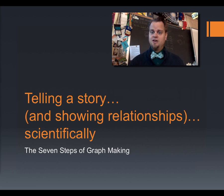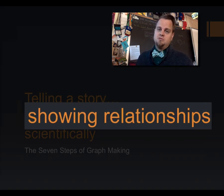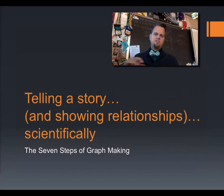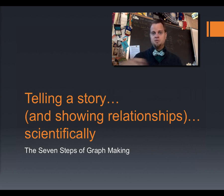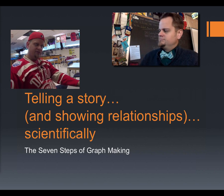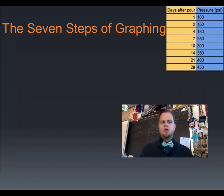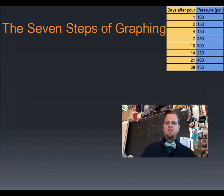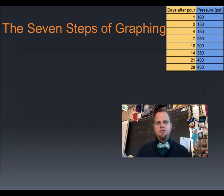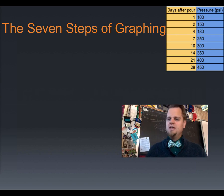But there's a second thing that a graph does: showing relationships. Between what? Whatever is on the x-axis and whatever is on the y-axis. More often than not, this is the relationship between the independent variable and the dependent variable. So here we have some data to graph. The blue column is the pressure it took to break a sample of concrete. The yellow column is how many days between when the concrete sample was poured and when we broke it. You might already notice a trend that the pressure to break the sample increases as the days increase as well.